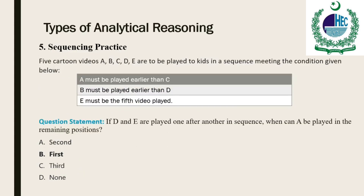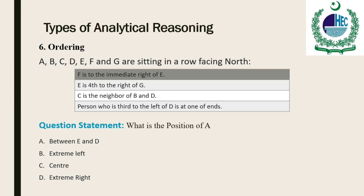In the sequencing type of analytical reasoning, a sequence question is also known as a ranking or ordering question. It requires learners to drag and drop items in the correct sequence. All items must be in the proper order to be graded as correct — the answer is considered correct only when all items are in order. Sequence questions are useful when you want to test learners on a procedure or process. Ordering questions require the student to put a number of items into the correct order.